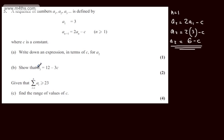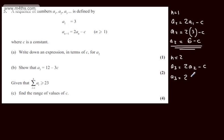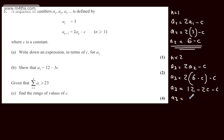In part B, we need to show that a_3 = 12 - 3c. The question carries two marks. Taking n = 2 and substituting in, we have a_3 = 2a_2 - c. Using our expression for a_2, a_3 = 2(6 - c) - c = 12 - 2c - c. Therefore a_3 = 12 - 3c, as required.